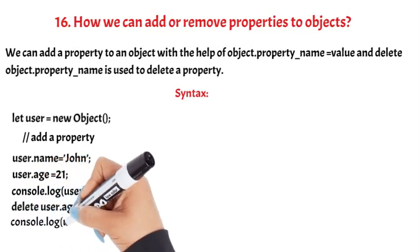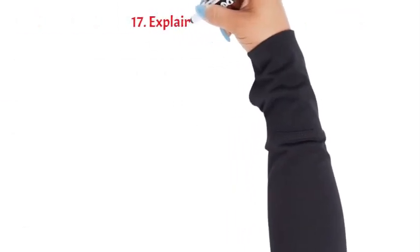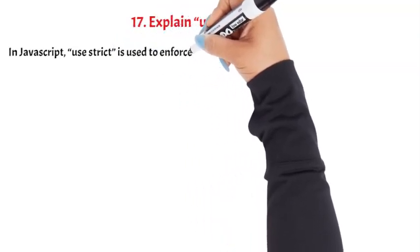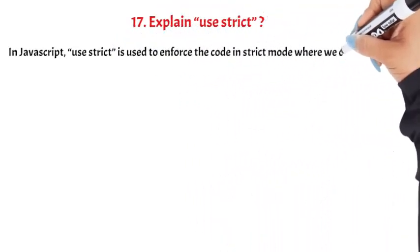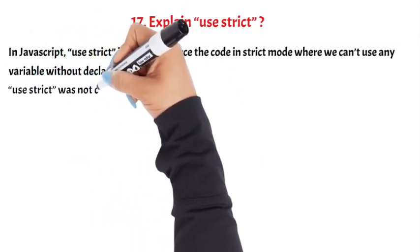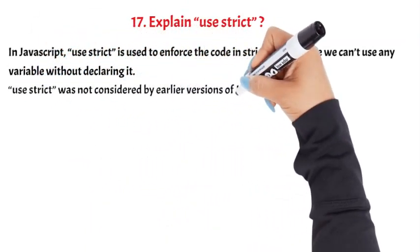Explain 'use strict' in JavaScript. 'Use strict' is used to enforce the code in strict mode where we can't use any variable without declaring it. Use strict was not considered by earlier versions of JavaScript. Question 18.